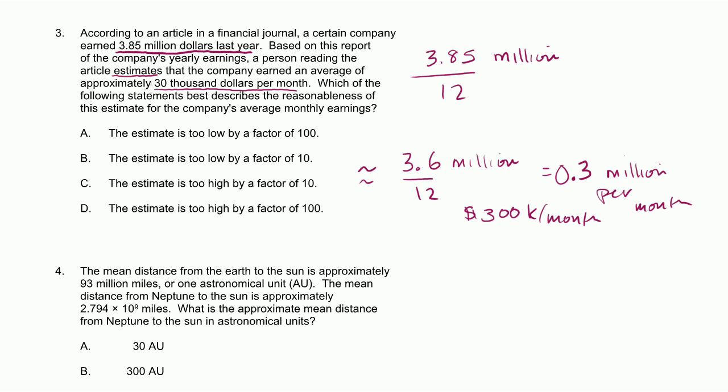Now, someone estimated that they made $30,000 per month. So they were too low by a factor of 10, right? You would have to divide the actual estimate, the correct estimate, by 10 to get their estimate. So their estimate is too low by a factor of 10. That is choice B.